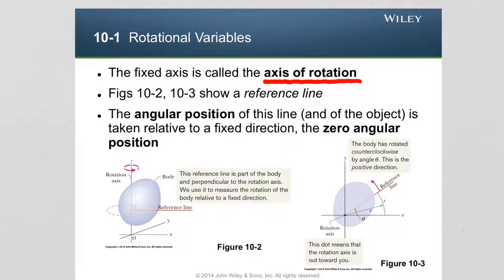The angular position is given by the angle which the reference line makes with a predefined direction of orientation — for example, the x-axis of a three-dimensional coordinate system x, y, and z — where the zeroth angular position is the position of the line matching exactly the position of the x-axis. As the rotation happens in counterclockwise direction, the angle of rotation from the x-axis gives us the angular position theta.